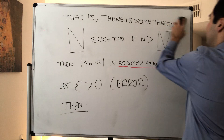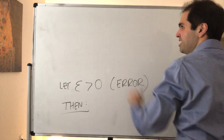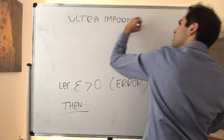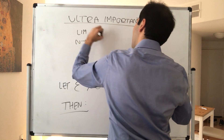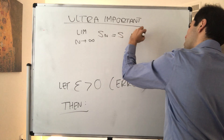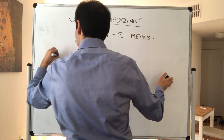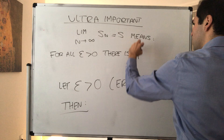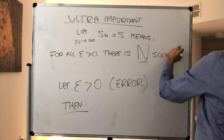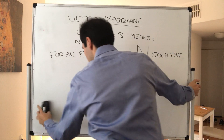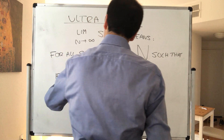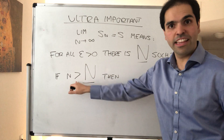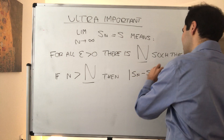This is the most important definition of this chapter. We say the limit as n goes to infinity of Sn equals s means: for all epsilon positive, no matter how small epsilon is, there is some threshold capital N such that if n is bigger than capital N, then |Sn minus s| is less than epsilon. No matter how small the error, there is some threshold such that once you reach it, the error is very small — Sn is at most epsilon away from s.